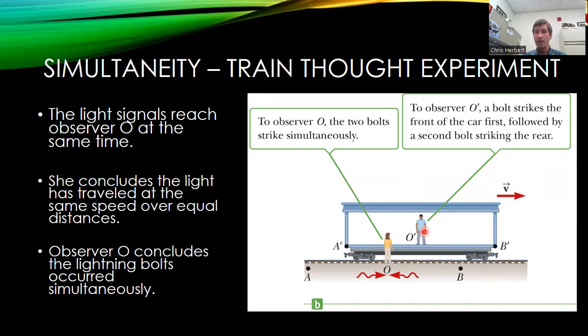Now, again, the speed of light has to be the same in both frames of reference. And that means that it's going to take more time from back than it is for the front for observer O prime.